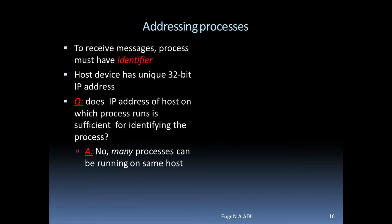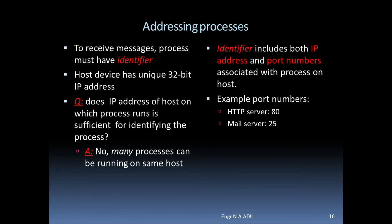Addressing processes: to receive messages, a process must have an identifier. A host device has a unique 32-bit IP address. However, the IP address of the host alone is not sufficient for identifying the process, because many processes can be running on the same host. The identifier includes both the IP address and port numbers associated with the process on the host.